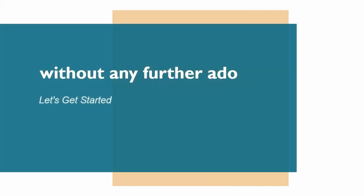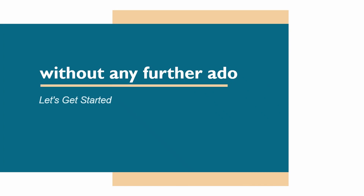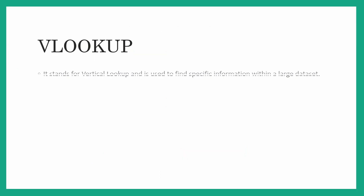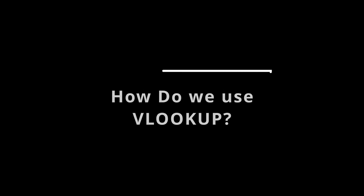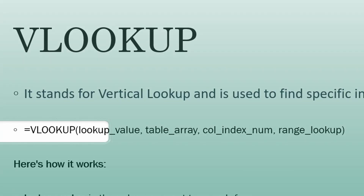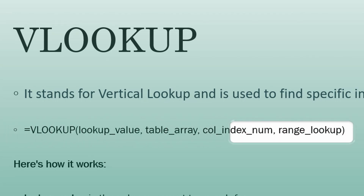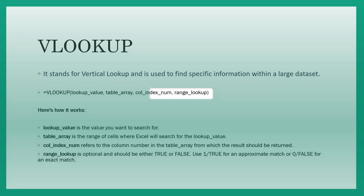Without any further ado, let's get started. The first and most important function we are going to look at today is VLOOKUP. VLOOKUP stands for Vertical Lookup and it is used to find specific information within a large data set. To use VLOOKUP, you type: VLOOKUP(lookup_value, table_array, column_index_number, range_lookup).